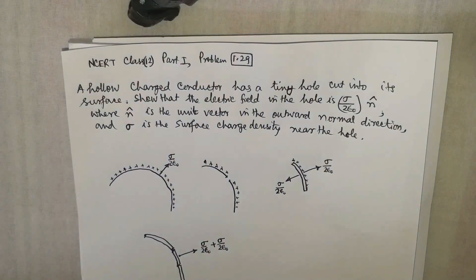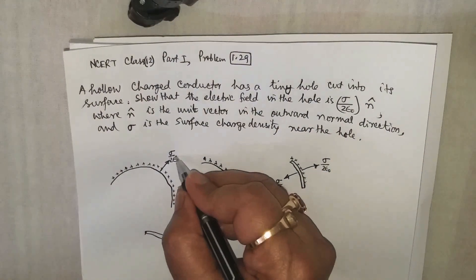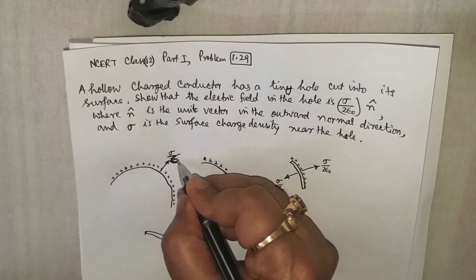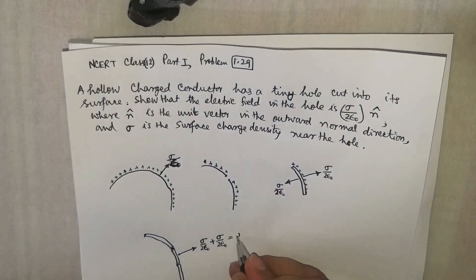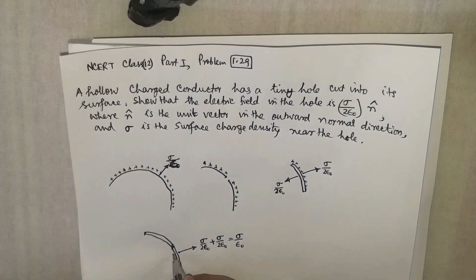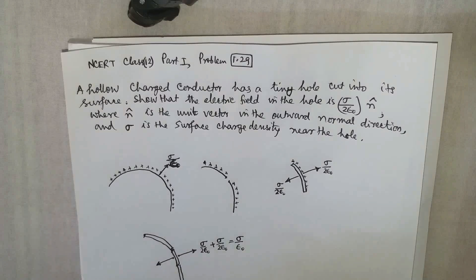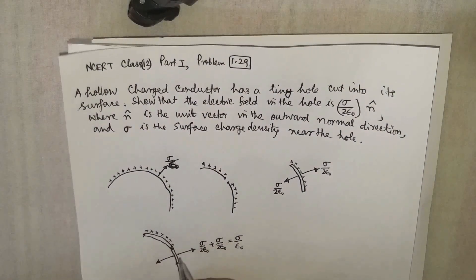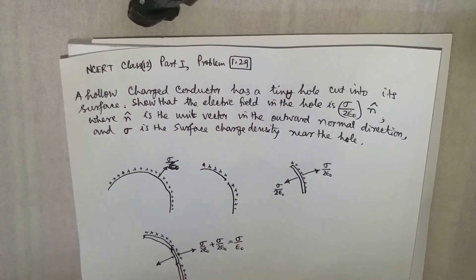Then only we can have sigma by epsilon naught as the net electrostatic field. So therefore we get sigma by epsilon naught just at the other point, that is inside where the conductor is carrying the charge as it is we have shown.